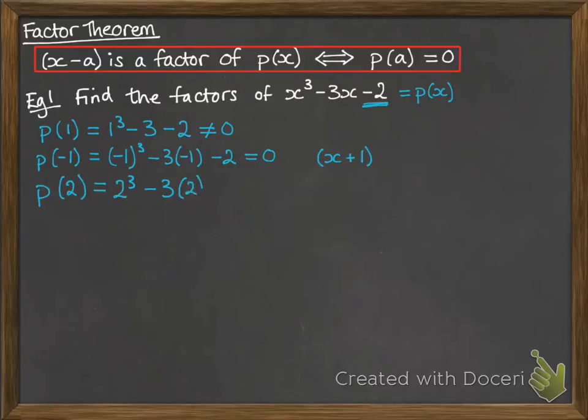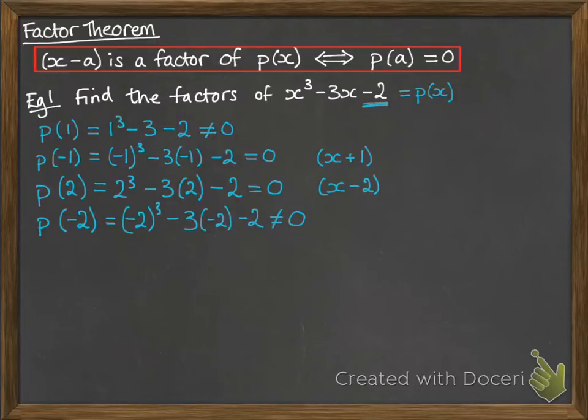Let's carry on looking for the other ones. That one is also equal to 0. So we put 2 in and we got 0, therefore x minus 2 is a factor. Now let's try the other factor of -2, which is -2. That does not give us 0, so -2 is not a factor.